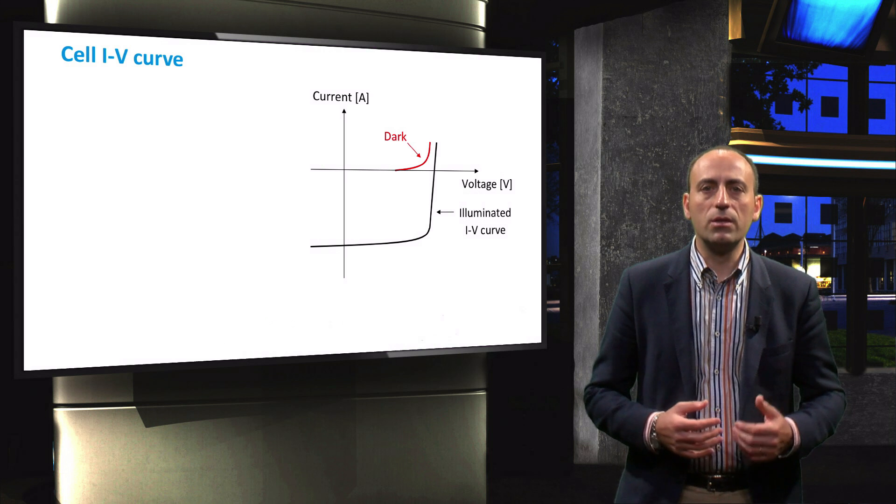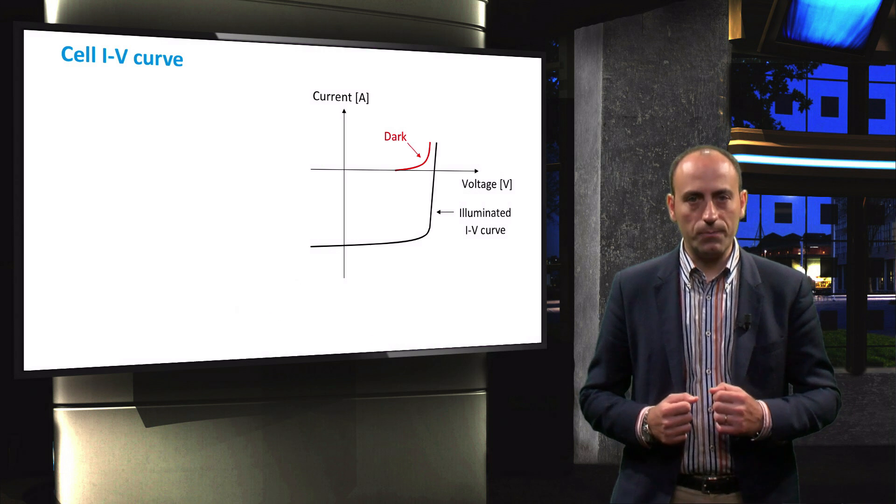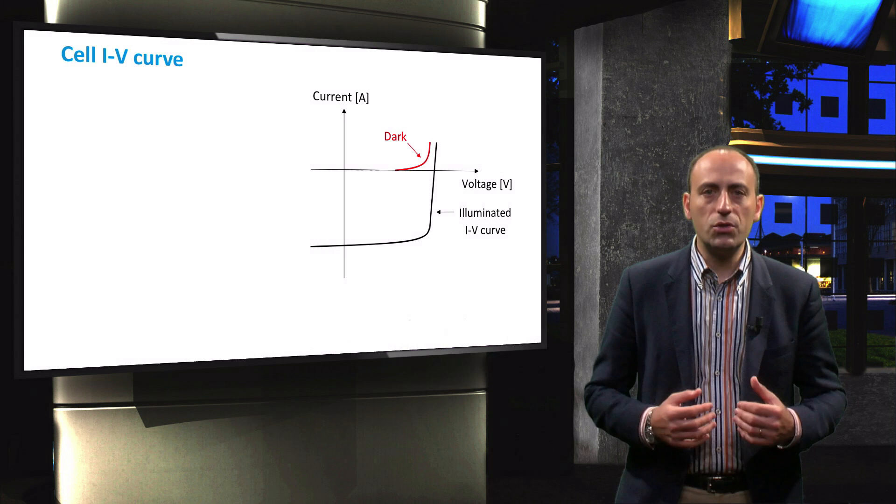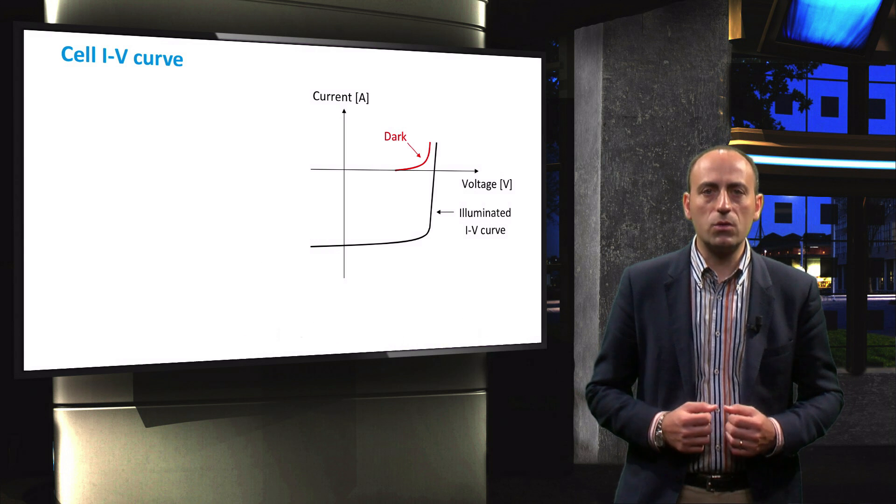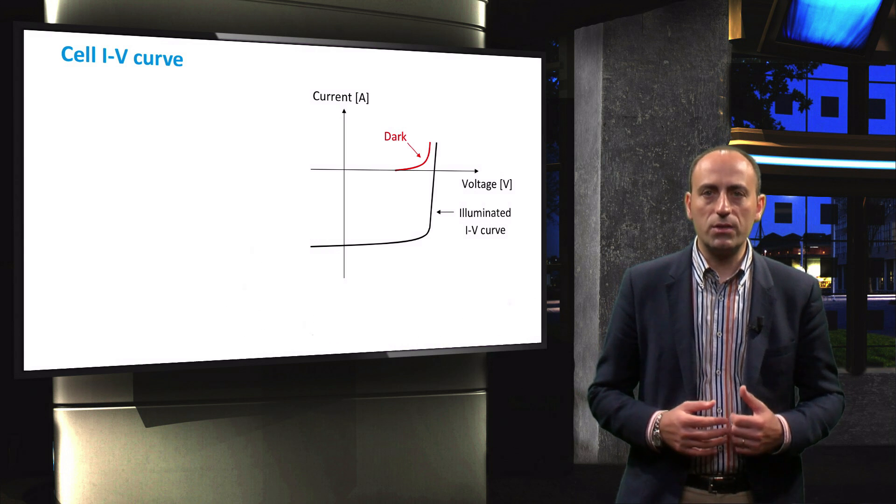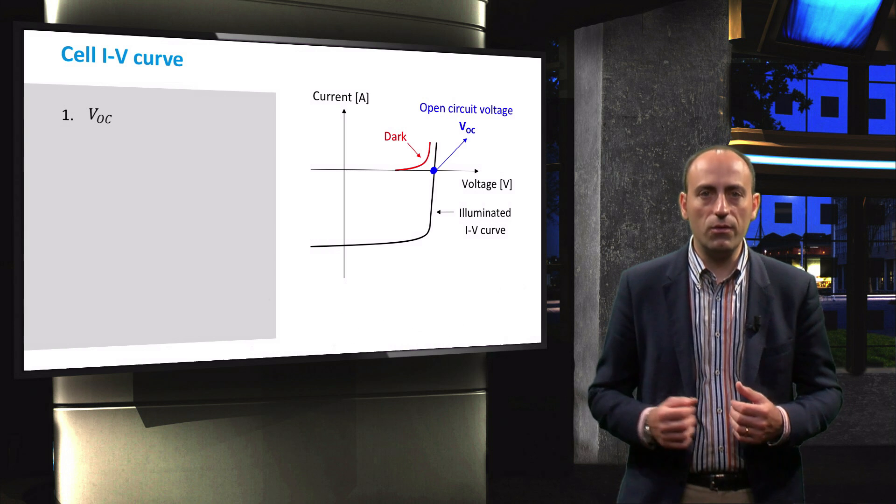This black curve indicates the current-voltage curve of an illuminated solar cell, while the red curve depicts the current-voltage curve in the dark. From this plot, we can discern the characteristic parameters of a solar cell, such as the open circuit voltage VOC, highlighted here in blue.